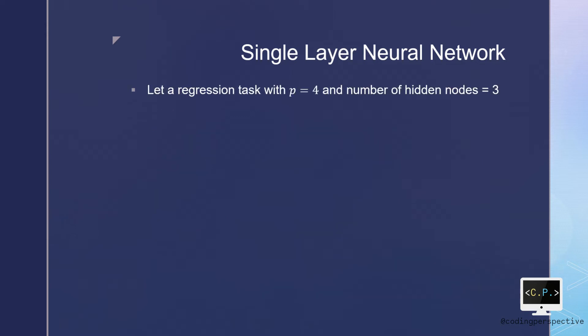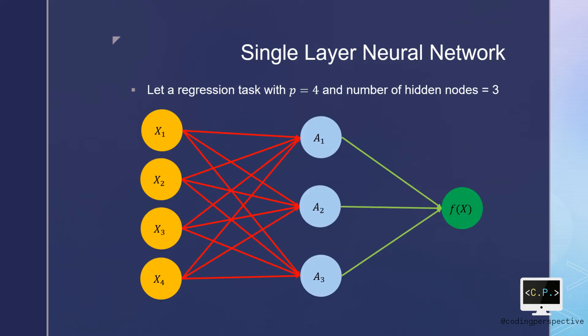Let us assume that our data has four features and our architecture has three hidden nodes. Then we have the following structure: four input nodes and three nodes in the hidden layer. Since we have a regression task, our output should be an output with one node.